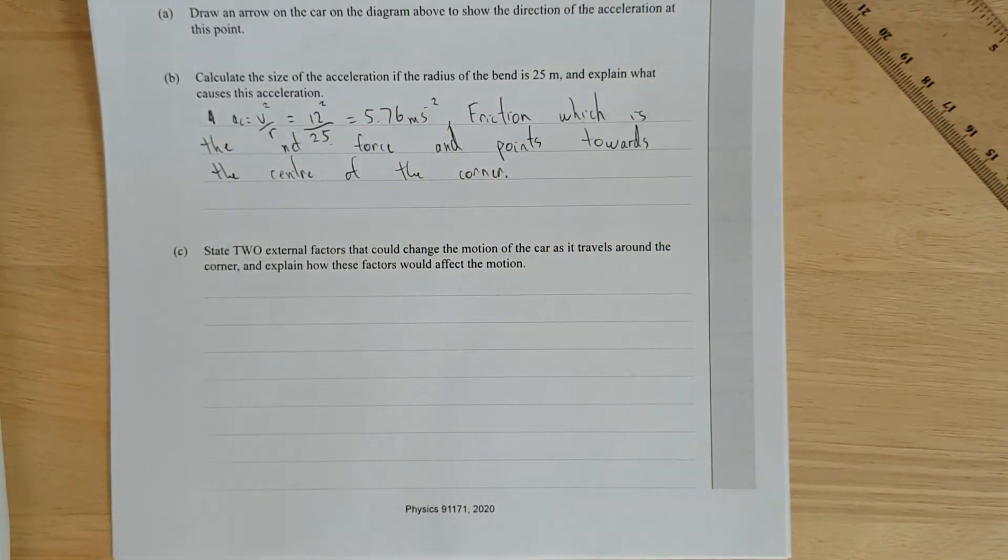Next one. State two external factors that could change the motion of the car as it travels around the corner, and explain how these factors would affect the motion. So, external meaning probably not the car. That would probably be oil slick on the road, if it's raining, if it's a gravel road. I don't think they want to get into the fact that if you have the corner banked or not, because that's a level 3 concept. So, probably two external factors here would definitely be just the road condition.